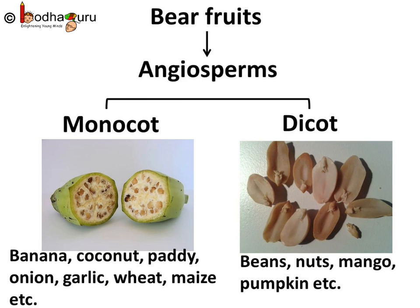Talking about seeds, some have many seeds like watermelon, but few have only one seed and others may have two or more seeds. Plants have structures inside the seed called Cotyledons. Cotyledons are called seed leaves because in many instances they emerge and become green when the seed germinates. On the basis of the number of cotyledons present in the seed, angiosperms are divided into two groups. If any angiosperm has a seed with one cotyledon, it is a monocot — for example, banana, pineapple, coconut, wheat, etc. are monocots.